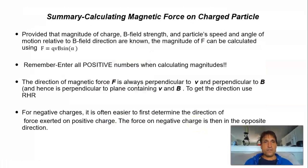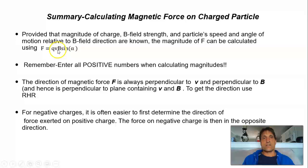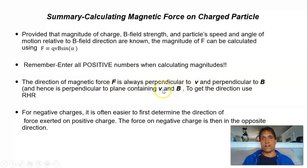Here's the summary for the force of a moving charge q in a magnetic field. The magnitude equals the magnitude of q times the speed times the magnitude of B times the sine of alpha — all positive values when getting magnitude. The direction is obtained using the right-hand rule: find the direction of v cross B, and if the charge is positive this gives you F directly. If the charge is negative, find v cross B and then flip the sign of the force at the end.